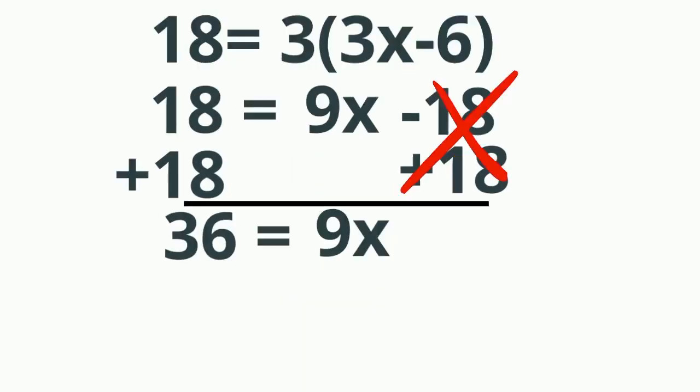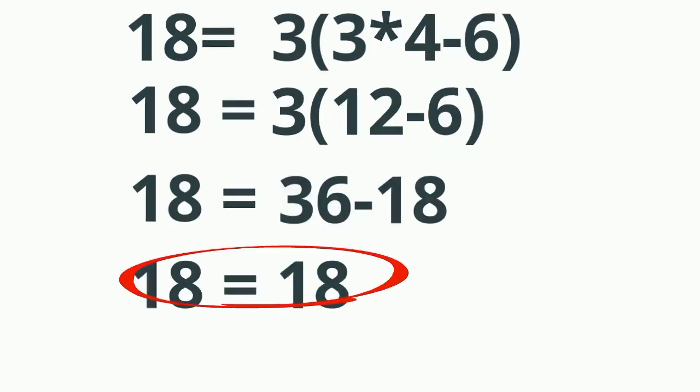Now I can undo the multiplication of 9x by dividing by 9. When I do this, I get x equals 4. When I plug it into the original equation, it does work out. It's correct.